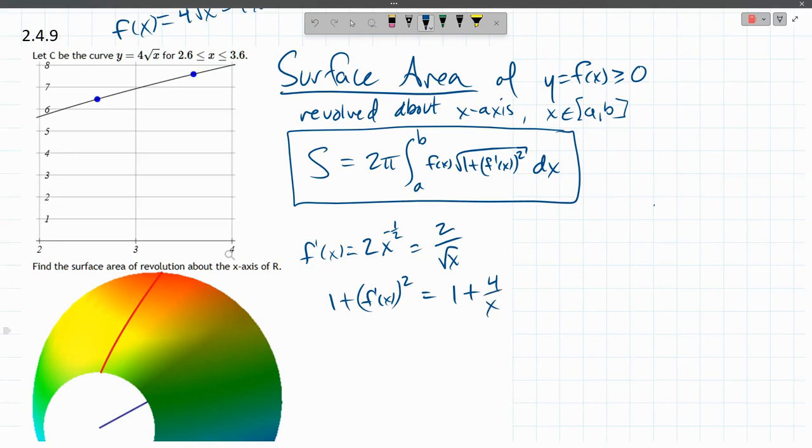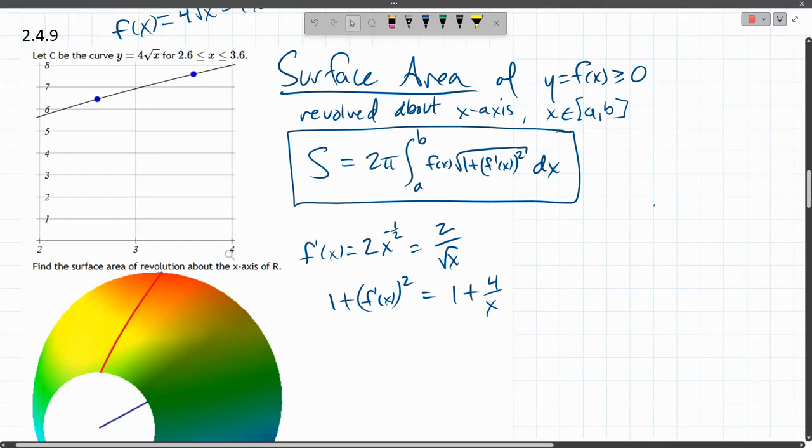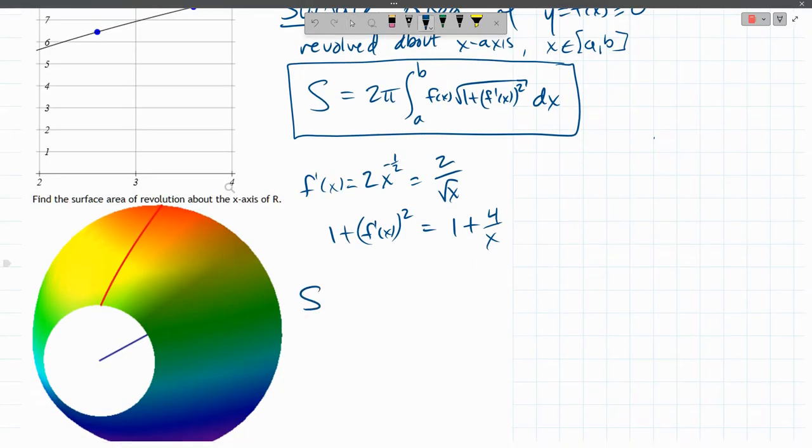And I think we're probably ready to load up the whole function now. So I'm just rewriting this into the original form. S = 2π integral from a to b of f(x) square root of one plus f prime x squared dx.